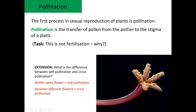Pollination is when we get the pollen grains — which some of you had a look at under the microscope — and they land on the stigma of a new plant. Here you can see the pollen grains attached to the stigma. This is not fertilization because the ovule is not actually being fertilized by the pollen, and the DNA at this point is not combined. If it's the same flower, it's self-pollination; a different flower is cross-pollination.